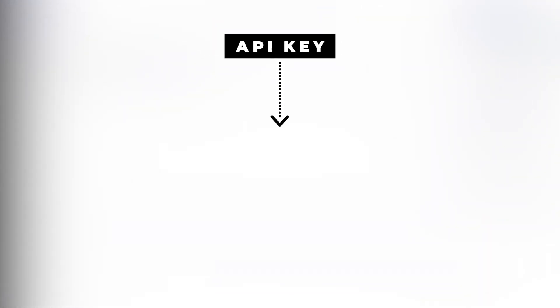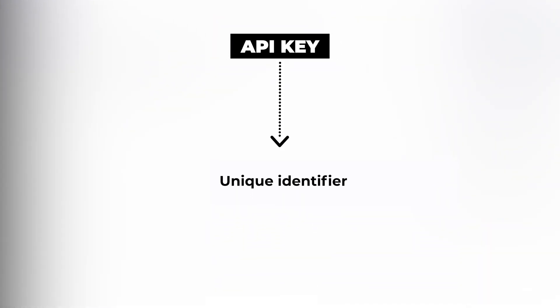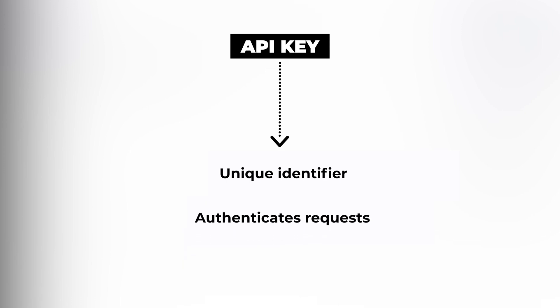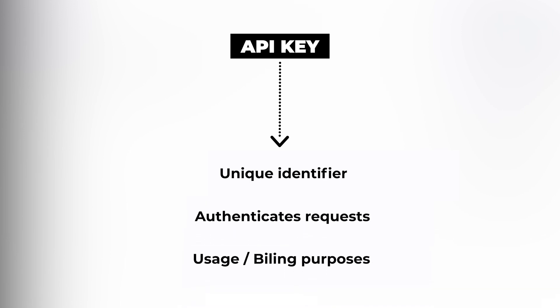An API key is a unique identifier that authenticates requests associated with your project for usage and billing purposes. By identifying the calling project,